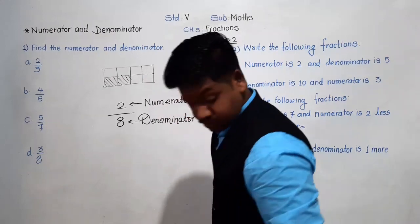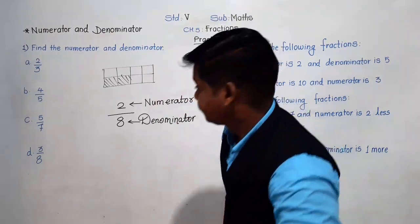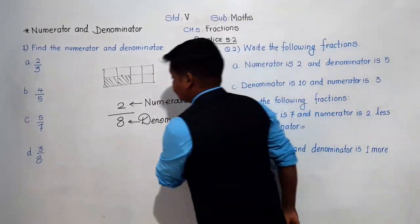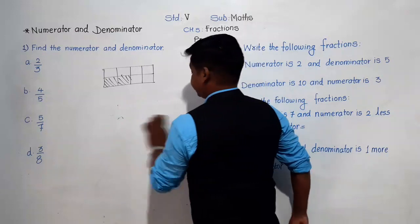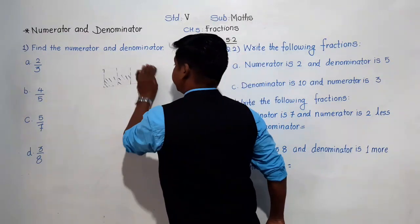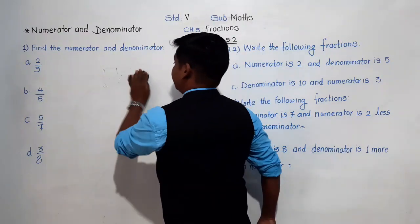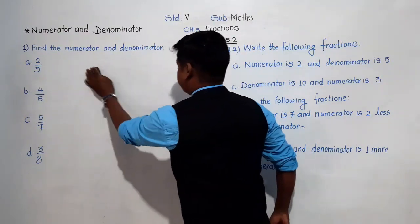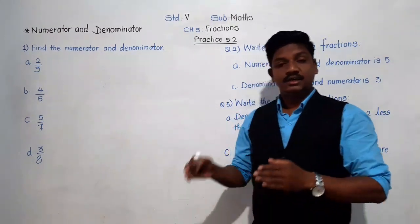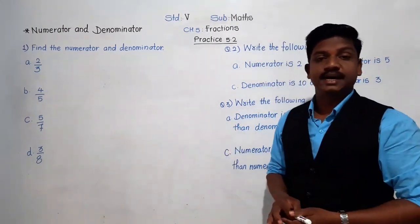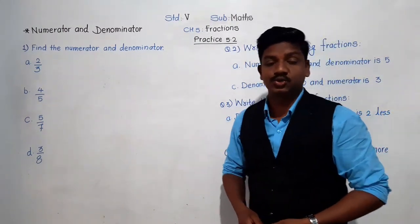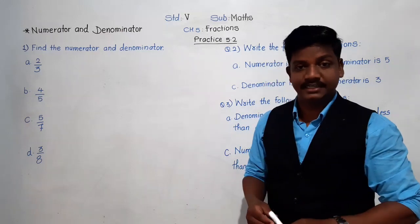Now we are going to solve Practice 5.2, which is based on numerator and denominator. It is very easy — just pay attention. The examples we are taking here, you have to solve as homework so that you will also get practice.